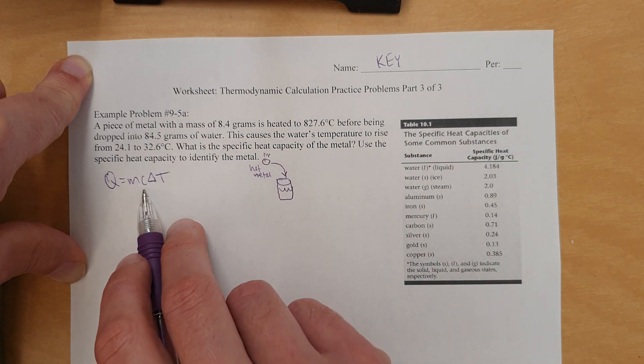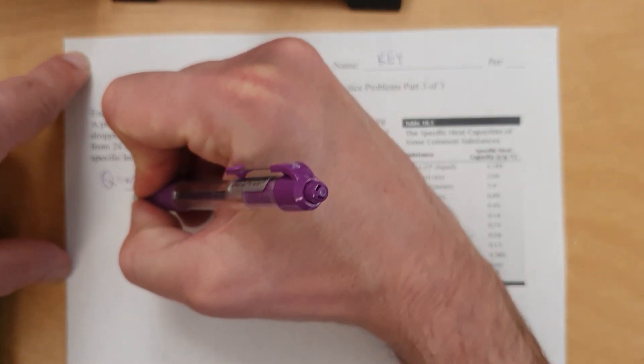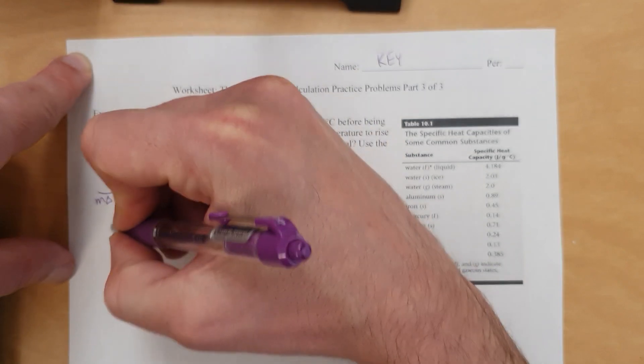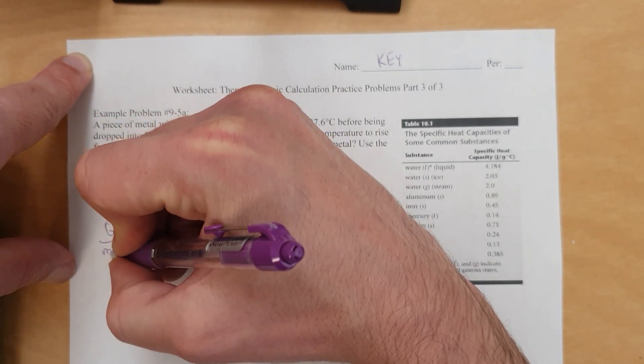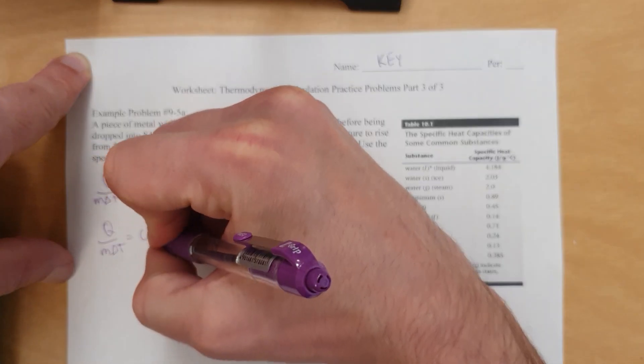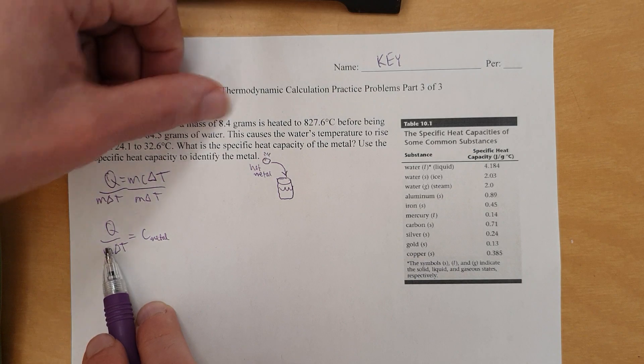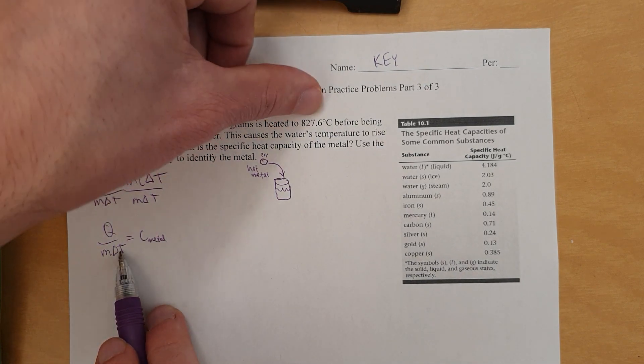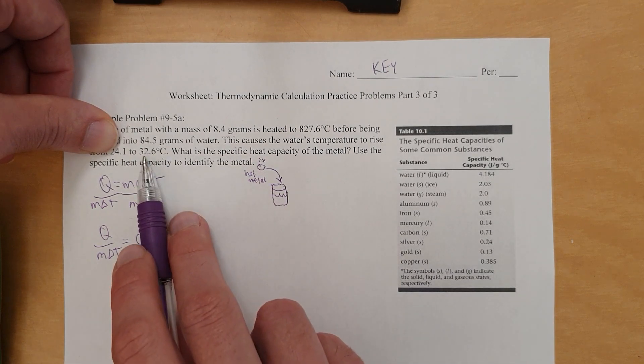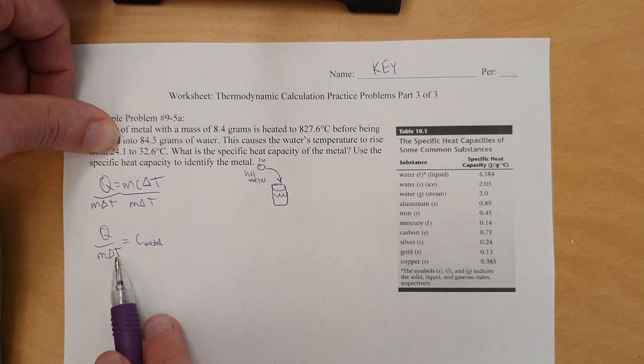So here's what we're going to do. We're going to take M delta T, divide both sides by that, and we're going to have Q over M delta T in order to get C for the metal. Because we can figure out the mass of the metal, it's right there. The delta T, we can figure it out. It's from this to this temperature. So it drops from 827 to 32, whatever. So that's what the delta T is.